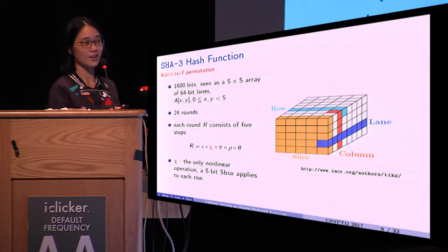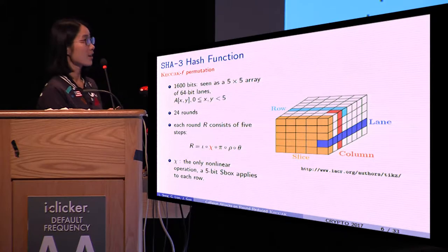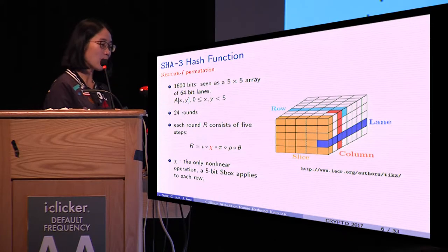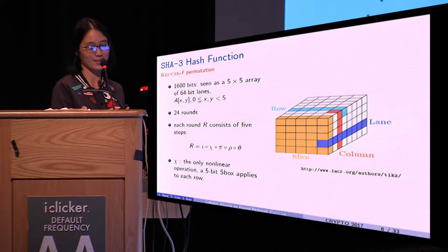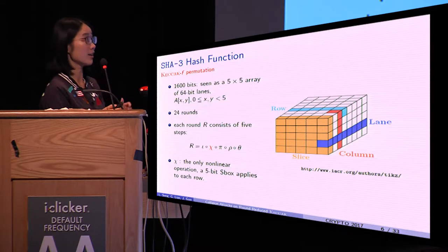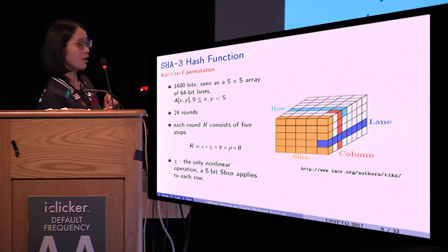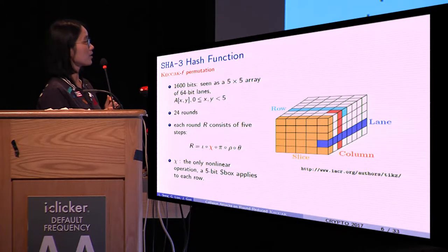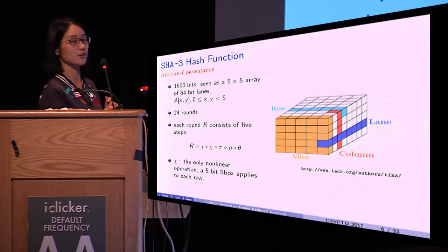The yellow part is called a slice, the purple part is called a column, the blue part is called a lane, and the sky blue part is called a row.